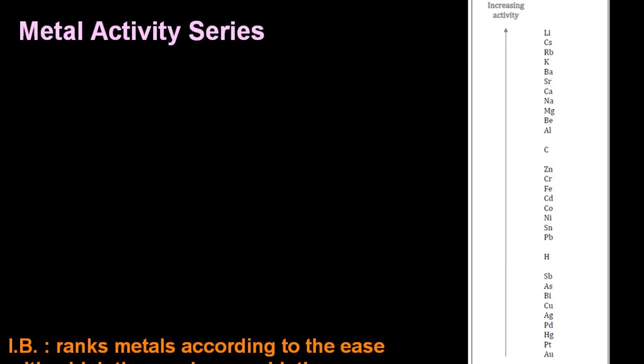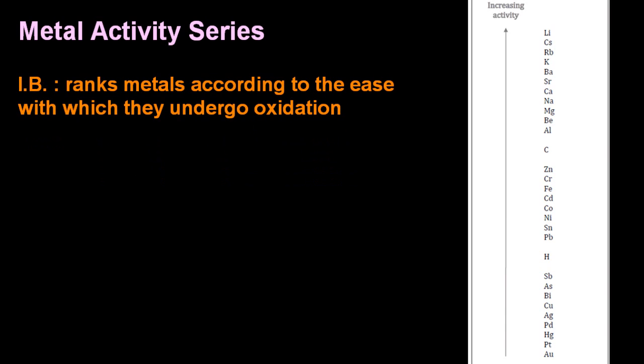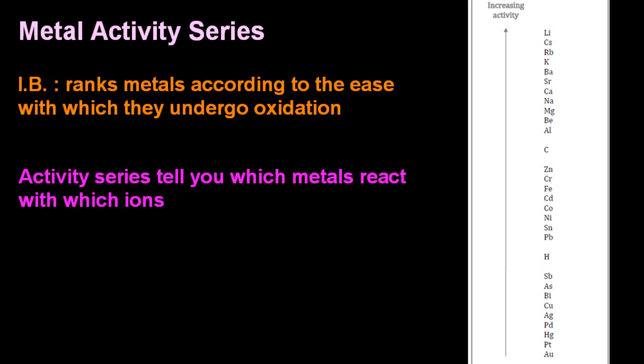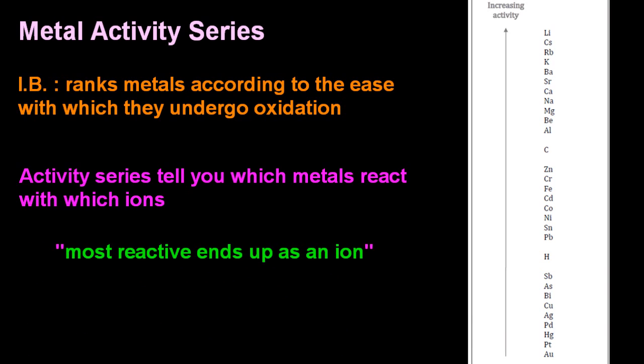The IB says a metal activity series ranks metals according to the ease with which they undergo oxidation, loss of electrons. An activity series I'm telling you tells you which metals react with which ions. And the little mantra, the most reactive ends up as an ion. That will see you through this part of the course.